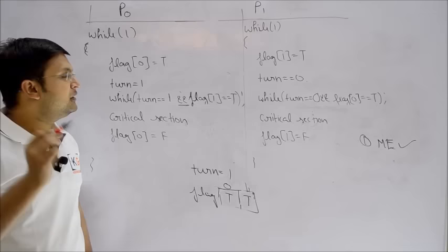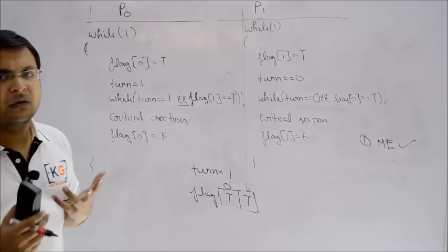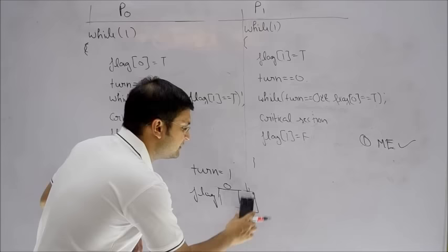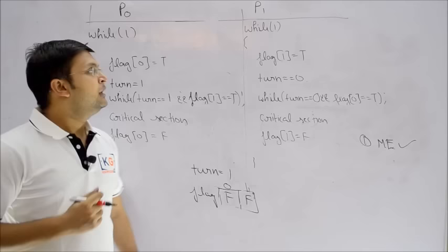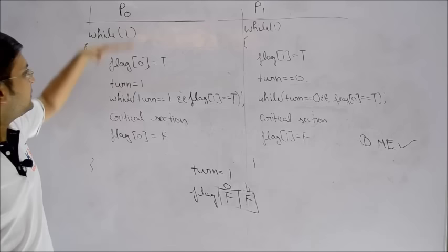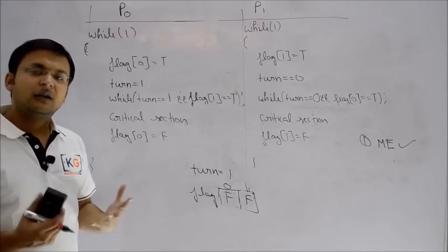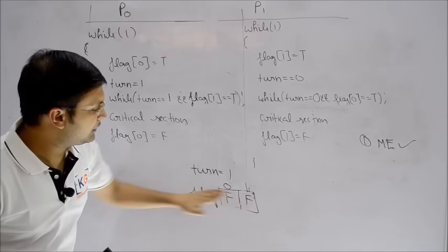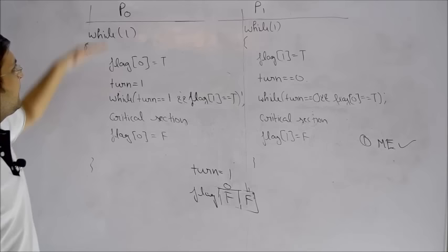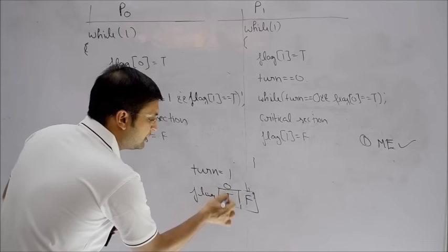After trying every case, we can confirm yes — this algorithm ensures mutual exclusion. At no instant do two processes enter the critical section simultaneously. But what's more difficult is proving progress. Let's check progress: first, only processes that want to enter the critical section should participate; second, the system should never reach deadlock. Let's also check whether this algorithm requires strict alternation.